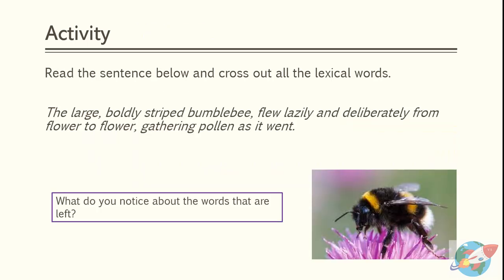Let's do another activity to practise your knowledge of lexical words. Read the sentence below and cross out all the lexical words. The sentence is: 'The large, boldly striped bumblebee flew lazily and deliberately from flower to flower, gathering pollen as it went.' After you've crossed out all the lexical words, what do you notice about the words that are left? Pause the video now to complete this activity in your notebook. When you're ready, restart the video to check your answer.